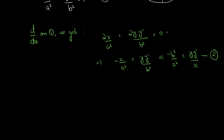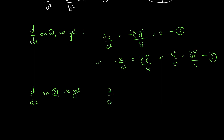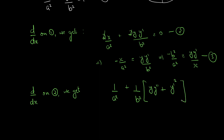Now, let this also be equation 3. We need to differentiate once more — applying d/dx on equation 2. We get 1/A² + 1/B² · (y · y'' + y' · y') = 0. Simplifying the product rule: 1/A² + 1/B² · (y · y'' + y'²) = 0.